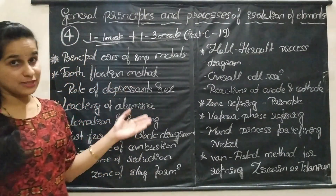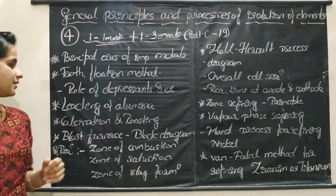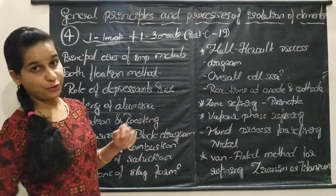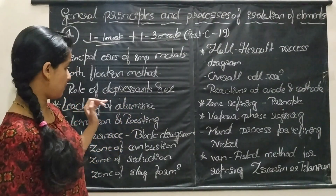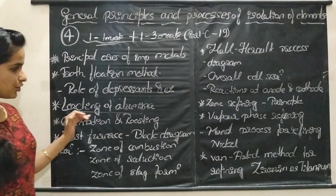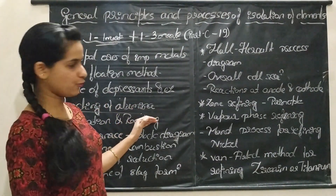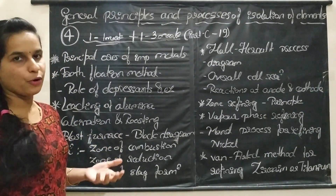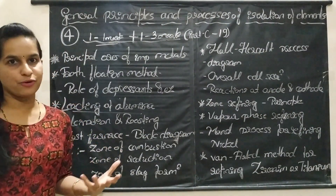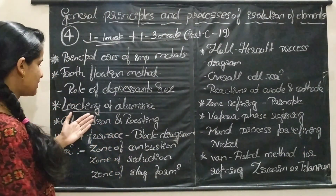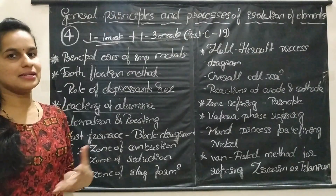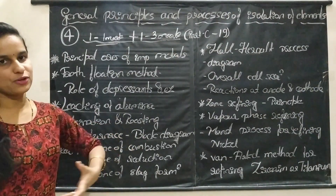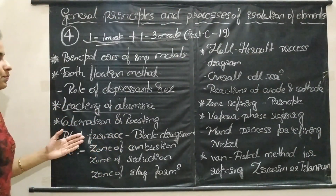Froth flotation method is important. Then, leaching of alumina from bauxite ores — it is very important. Then, calcination and roasting — for which type of ores or which type of metals these methods are used. These types of questions may be asked.